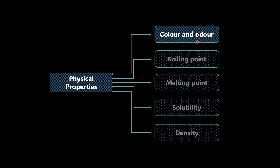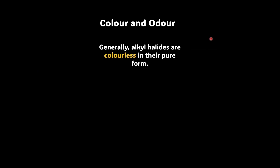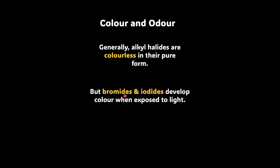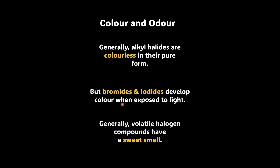Let's start with color and odor. Generally, alkyl halides are colorless in their pure form. But bromides and iodides do develop color when exposed to light. When we talk about volatile halogen compounds like small alkyl halides such as methyl chloride and methyl bromide, they do develop some sweet smell.